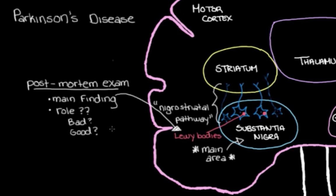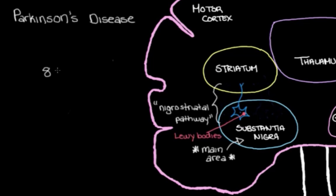So back to our nigrostriatal pathway. More and more of these dopamine neurons die. We lose more of them. And when we've lost about 80% of them, so quite a bit, that's when we start to see bradykinesia and rigidity and some problems with movements, the things that are actually the physical signs of Parkinson's disease.